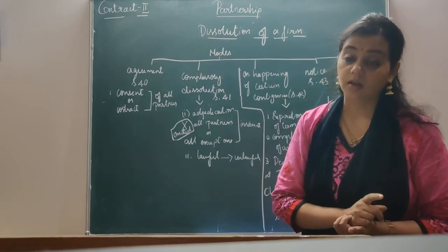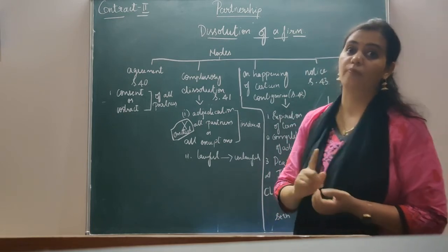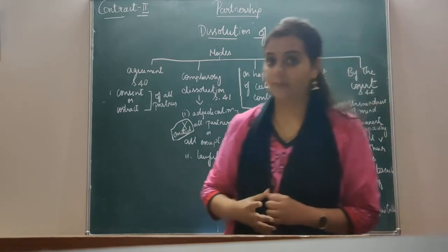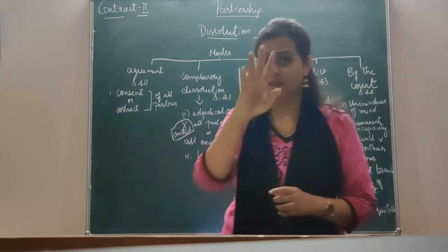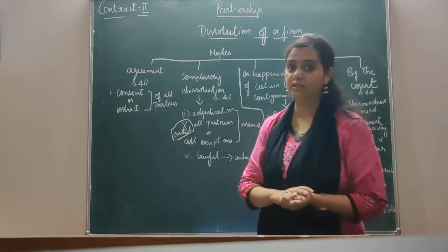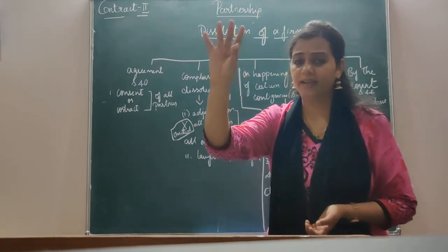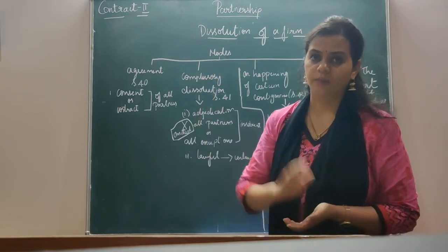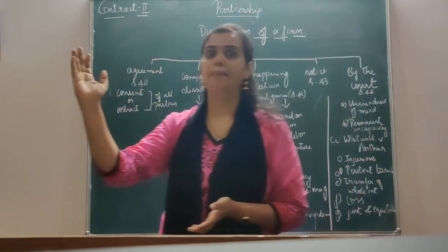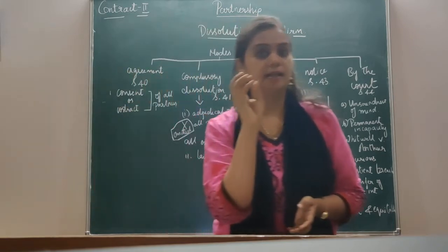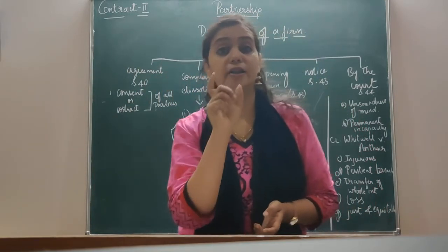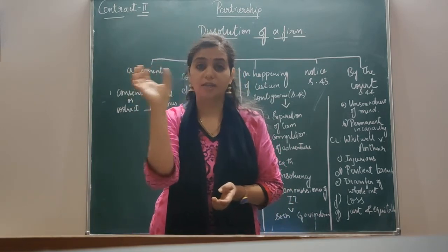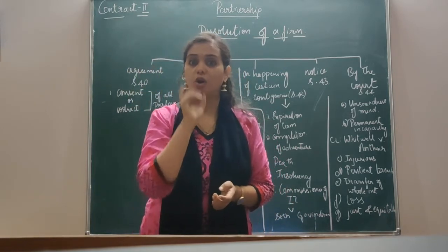Don't get confused with the dissolution of partnership. For example, with 3 partners A, B and C — if person A is retiring from the firm, he ceases to be a partner. That particular thing is called dissolution of partnership. Partnership means the relationship partners have with each other.